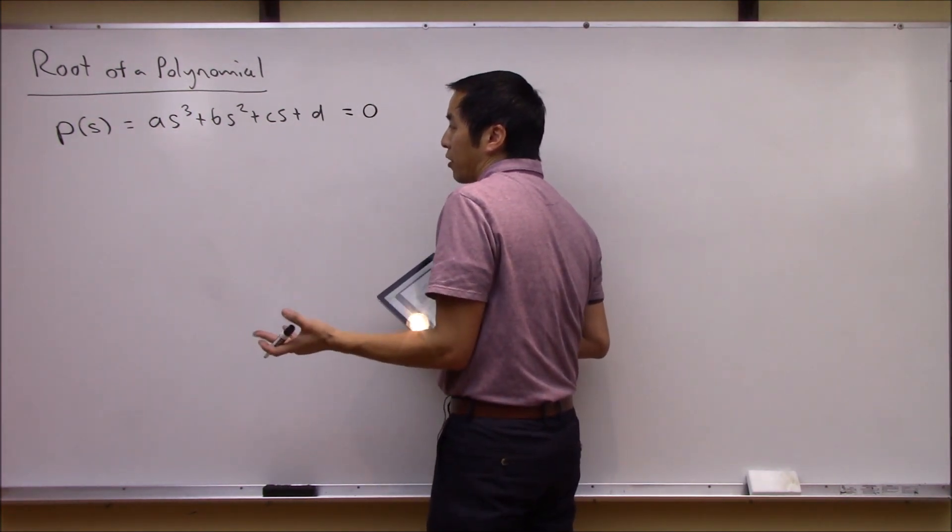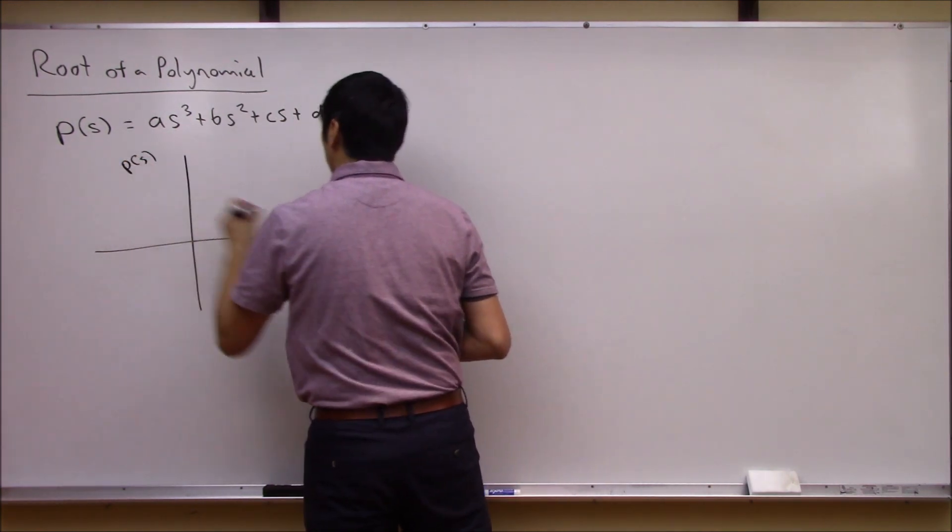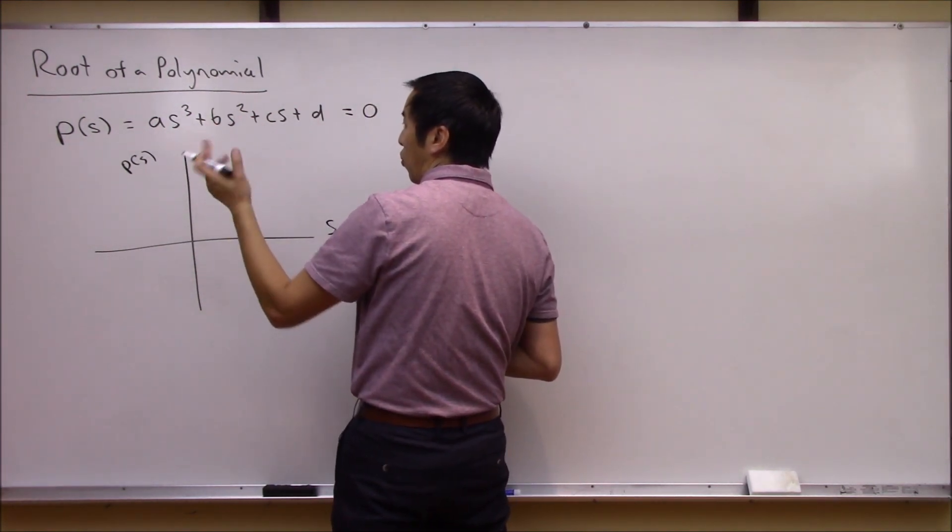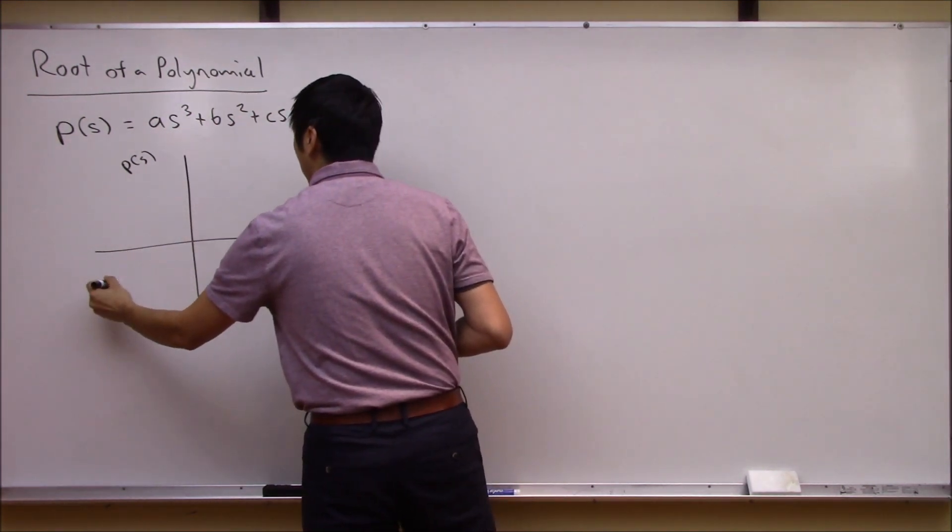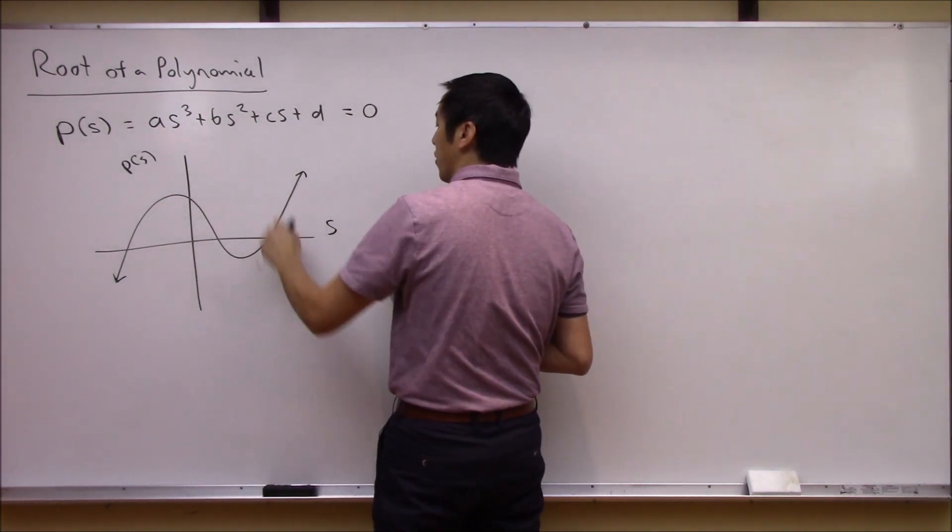In other words, if you want to think about this graphically, if I were to plot out this polynomial P(s) versus the independent variable s, for something like this with a third order polynomial, I expect it to maybe look something like this.